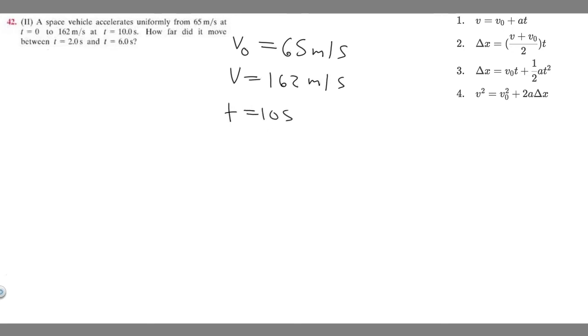What we need to find is delta x, but in order to find delta x we're going to need acceleration. So we're going to have to solve for acceleration first. To solve for acceleration we need to pick one of these formulas. All of these contain delta x which we're not given, so we're going to use the first one to find acceleration.